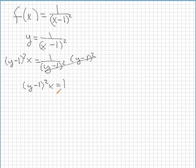So now what we need to do is we still need to get y by itself. We're going to divide both sides by x. What we get is y minus 1 squared equals that.